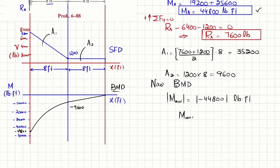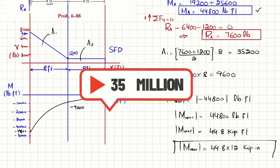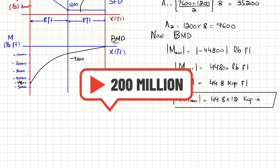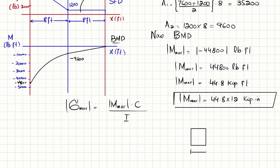The maximum bending moment absolute value is 44800 pound-feet. Converting to kips: 44.8 kip-feet. Converting to kip-inches: 44.8 times 12, since one foot equals 12 inches. The maximum absolute bending stress formula is sigma equals M times c divided by I. The square cross section is 9 inches by 9 inches. We find the moment of inertia I for this section.